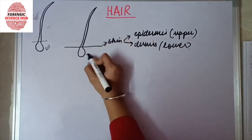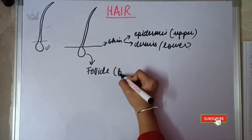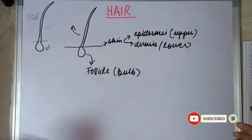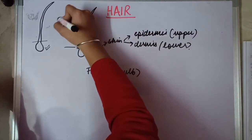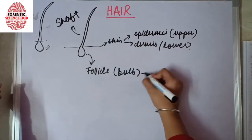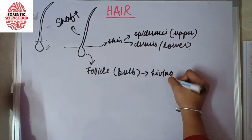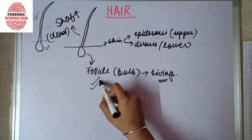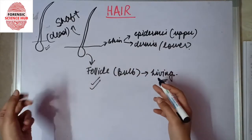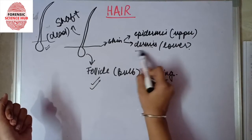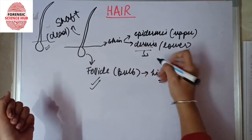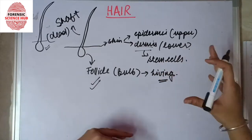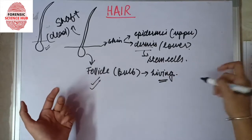The portion underneath, present in the dermis region, is known as the follicle — also referred to as the bulb. The upper portion that we can see with our eyes is known as the shaft. The follicle is the living portion of the hair while the shaft is dead. It is because of the follicle that our hairs grow, as it is present in the dermis region which has stem cells that allow the growth of new cells.